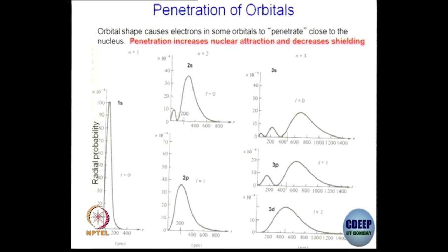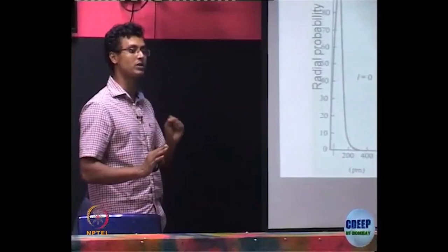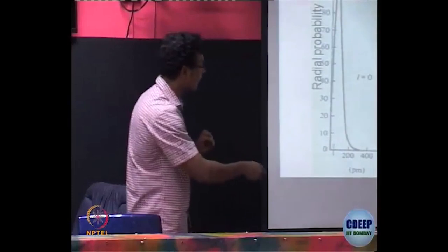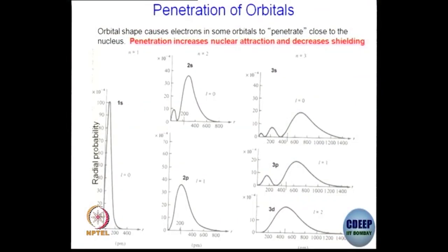As you can see, 1s is very close to the nucleus and thereby the penetration of 1s is going to be the maximum, and it can neutralize the positive charge most efficiently. For example, 3d — 3d is distributed such that the maximum probability of finding 3d electrons is really far from the nucleus. Therefore, the neutralization ability of 3d electrons is going to be the least out of all these orbitals shown here.